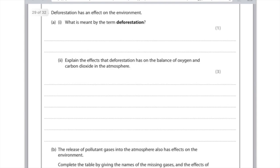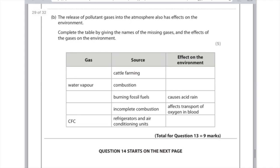Deforestation has an effect on the environment. What is meant by the term deforestation? That is the removal of trees or cutting down a forest. Explain the effects that deforestation has on the balance of oxygen and carbon dioxide in the atmosphere. That's going to lead to more CO2 because the trees are no longer taking the CO2 in their photosynthesis. You need to say there is less photosynthesis. Remember, oxygen is produced as a by-product of photosynthesis, so automatically there's going to be less oxygen.